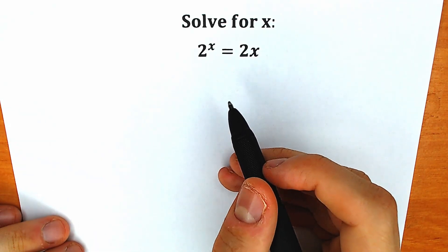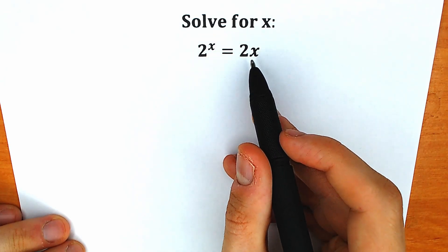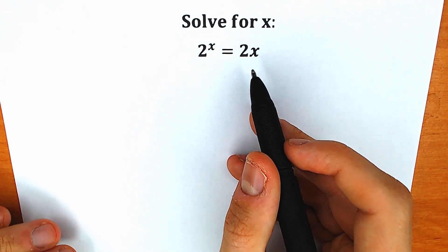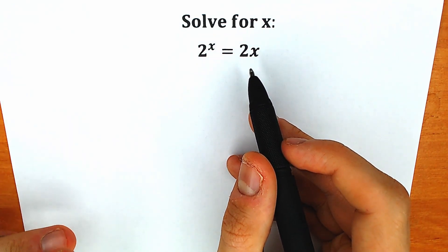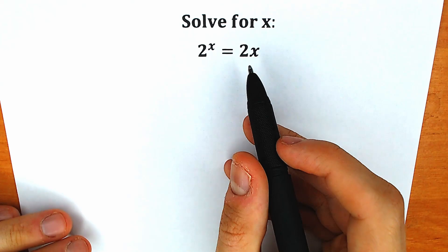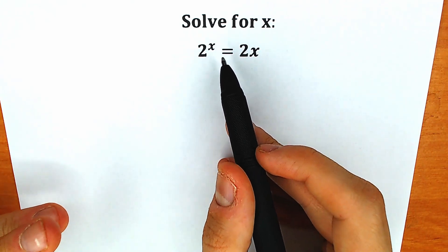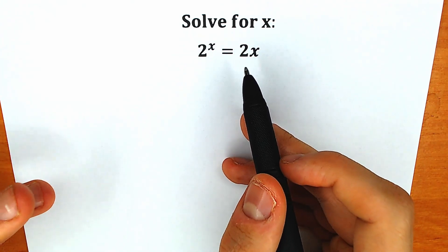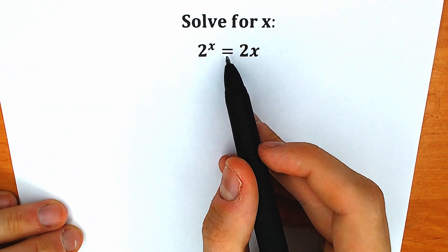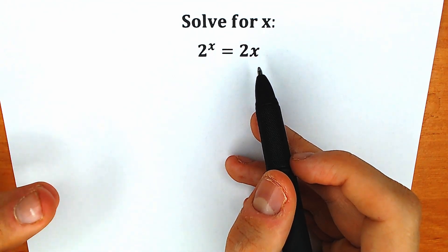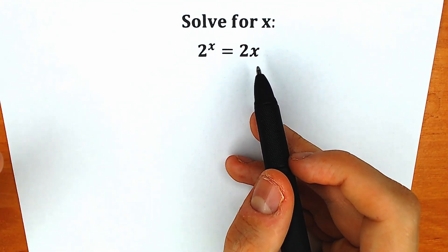Today we have a very interesting exponential equation: 2 to the x equals 2x, and we need to find our x. A lot of students may be saying, hey mister, this is the easiest question I've ever seen, because by inspection x is equal to 1. It looks like a correct expression because 2 to the first equals 2 times 1, so maybe x is equal to 1 and that's it.